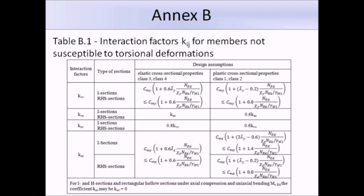This is table B.1, interaction factors KIJ for members not susceptible to torsional deformations. It's similar to table A.1, because the interaction factors are on the left, and the different sections for the different classes of section are on the right. This table is much shorter than table A.1, and it's much more straightforward to use. But again, we must determine the equivalent uniform moment factors from an additional table, and in this case it's table B.3.